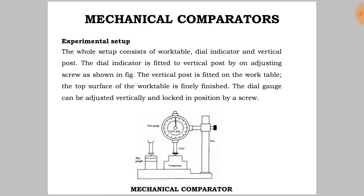The experimental setup consists of a work table, dial indicator, and a vertical post. The dial indicator is fitted to the vertical post by an adjusting screw. The vertical post is fitted on the work table, whose top surface is finally finished. The dial gauge can be adjusted vertically and locked in position by a screw.